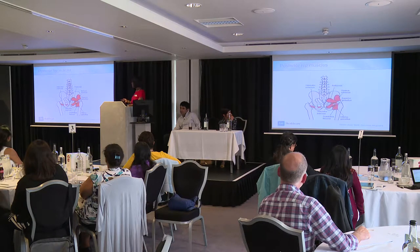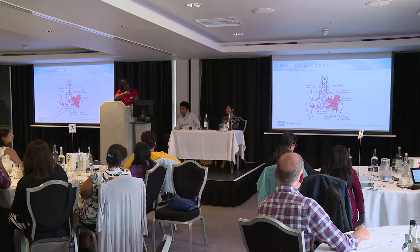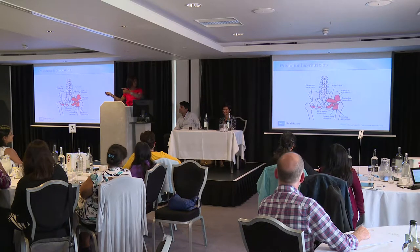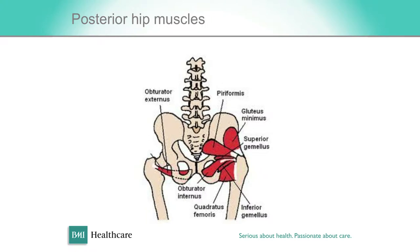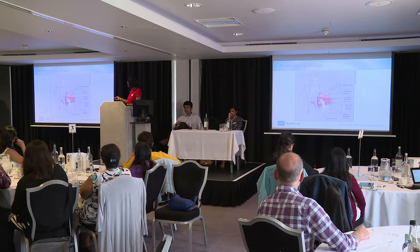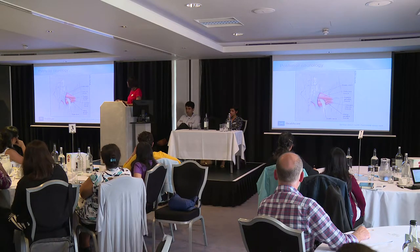Around the back of the hip, you've got the short external rotators deep to the gluteus maximus. Coming through those muscles you have the sciatic nerve. It usually comes just below the piriformis muscle, but it can come above or below. If there's hypertrophy of that muscle — in weightlifters or bodybuilders — it can lead to impingement of the nerve and they can get sciatic-like symptoms. So when a patient complains of sciatica, it doesn't necessarily mean it's coming from the lumbar spine — the nerve could be trapped between the muscle.